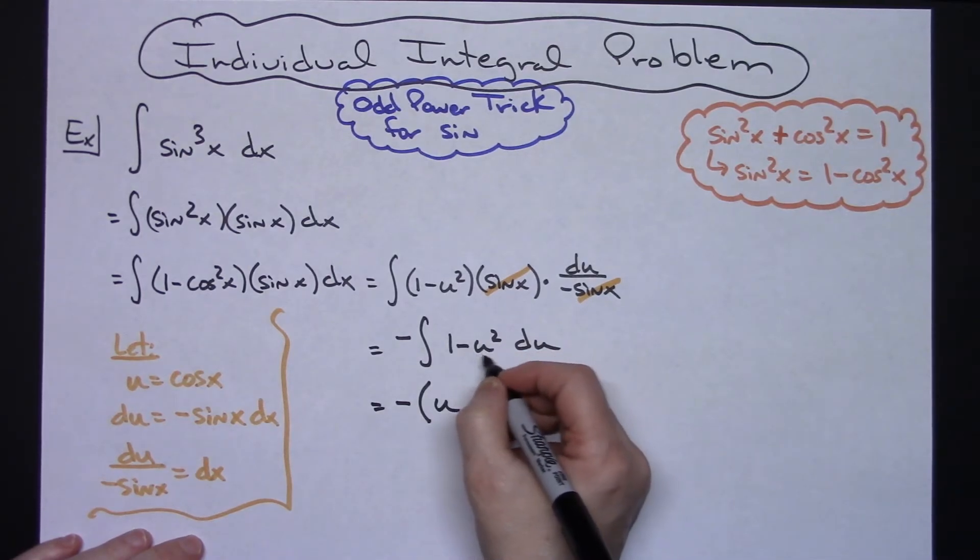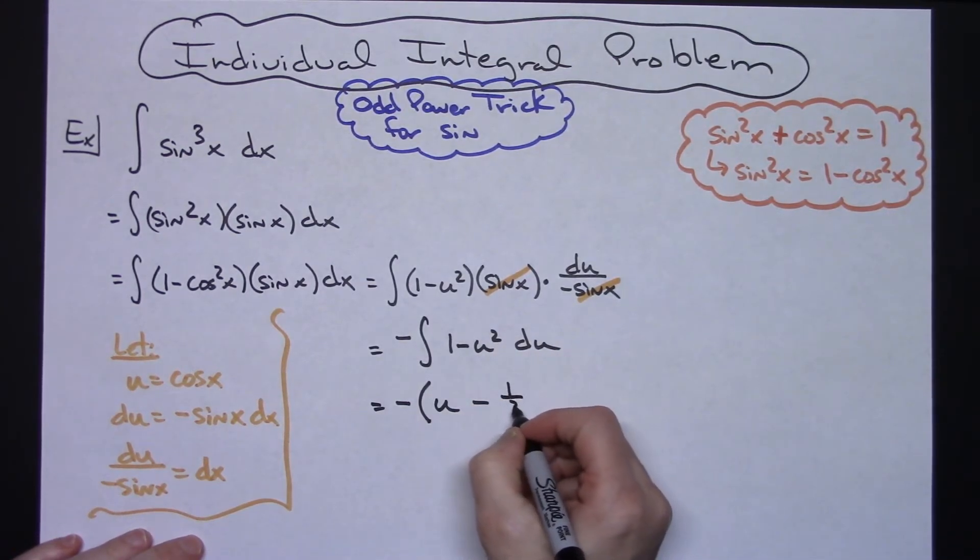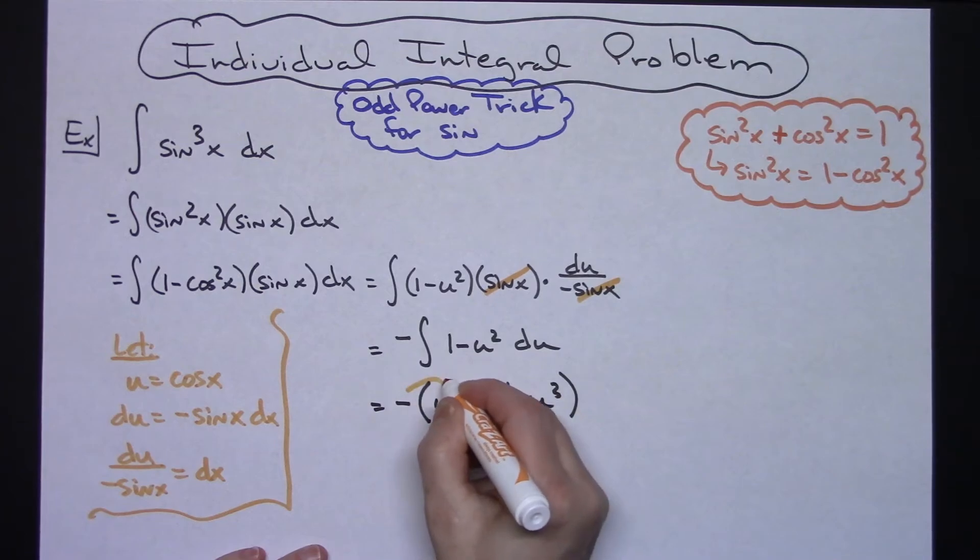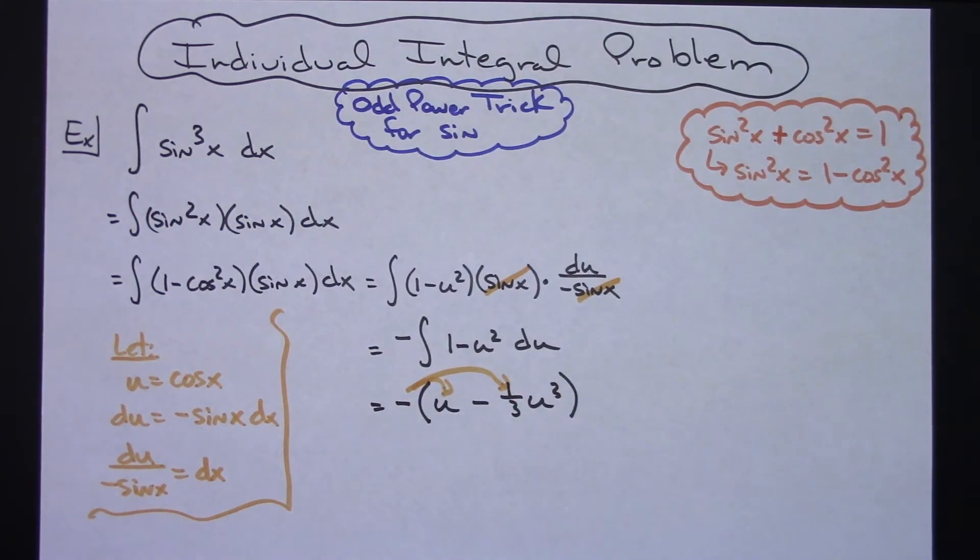When I integrate the u squared, I'm going to get one-third u to the third. Then you can't forget that you're going to need to distribute that negative that we pulled out there.